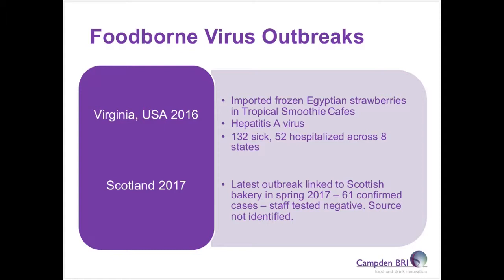Very recently in Scotland, just this spring, there were 61 confirmed cases associated with hepatitis A, all linked with products consumed from a bakery. At the moment we don't know the source, but all staff have tested negative, so it will be interesting to see the report when it comes out. This shows that although hepatitis A outbreaks are not as common as norovirus, they do tend to involve quite a lot of people.